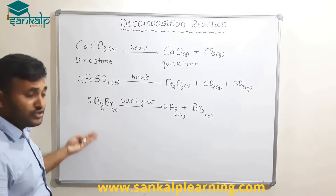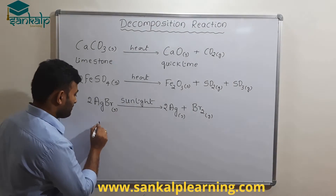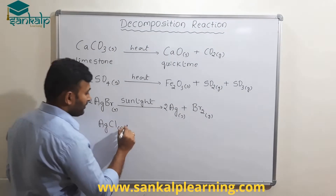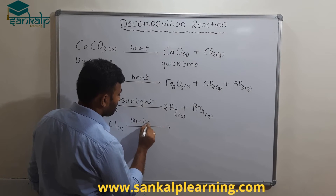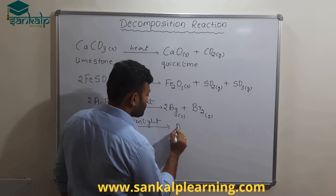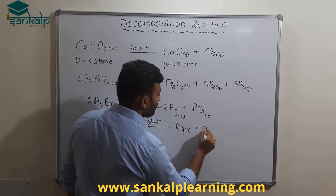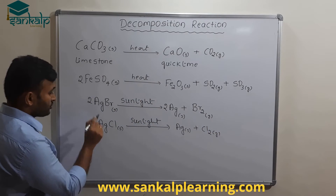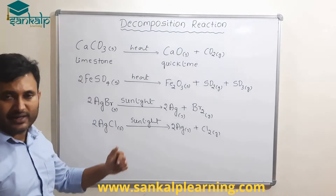Silver chloride, AgCl, also takes place in the same way. When AgCl absorbs sunlight, it gives silver plus chlorine gas, Cl2. So it should be 2AgCl giving 2Ag plus Cl2. The reaction is balanced.